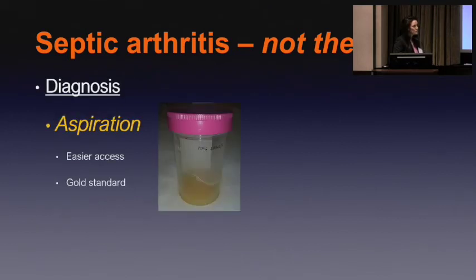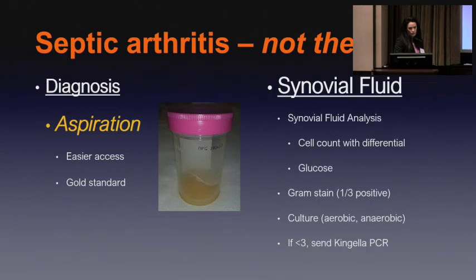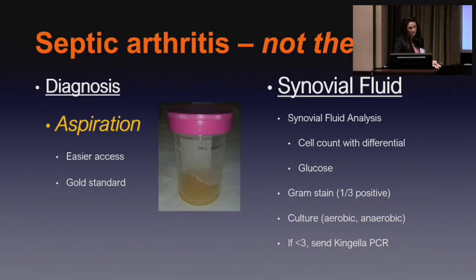When we're not talking about the hip, the gold standard of diagnosis is to aspirate it — get the fluid out. We get the synovial fluid, send it for analysis, and probably the most important thing we're looking at is the cell count with differential. We always send for gram stain, though it's only really positive about 30 to 60 percent of the time even with frank pus. We also send for culture. And if they're younger kids, we send for Kingella PCR, since that's a more common causative agent in young kids.